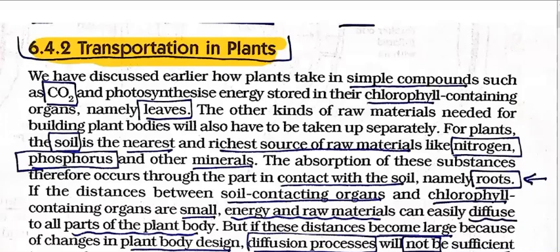We discussed earlier how plants take simple compounds such as carbon dioxide, and photosynthesis energy is stored in their chlorophyll-containing organs, namely leaves. In other kinds, the raw material needed for building the plant body must also be taken up separately. For plants, the soil is the nearest and richest source of raw materials such as nitrogen, phosphorus, and other minerals. Soil contains many inorganic ions — nitrogenous ions, phosphorus, calcium, zinc, and other essential ions — which the plant takes up through its roots. The absorption of these substances occurs in the part in contact with the soil, namely the roots.